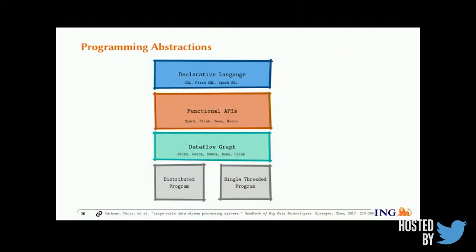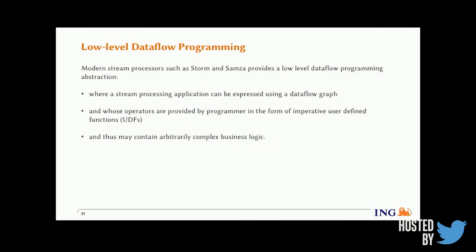There are different abstraction levels: the low-level programming abstraction is the data flow graph; on top of that is a functional API; and on top of that are declarative languages like CQL, Flink SQL, and Spark SQL. In low-level data flow programming, the streaming program is encoded as a DAG — a directed acyclic graph — where each node represents a computation or operator working on streaming input. Users extend some kind of interface to build those operators, which are interconnected by channels and can contain arbitrarily complex business logic.